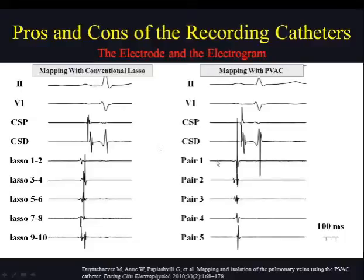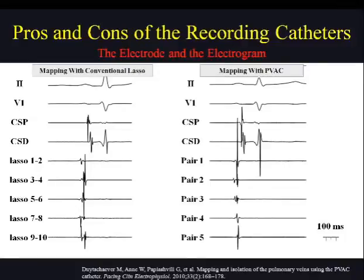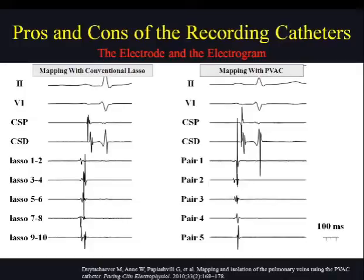We always use the PVAC recordings in a set of 5 pairs. The recording system is a BART EP system with a gain of 16. Filter settings are high-pass 100 Hz to low-pass 500 Hz. You can appreciate the far-field potential and the sharp PV potential, just like a conventional circular mapping catheter recording.